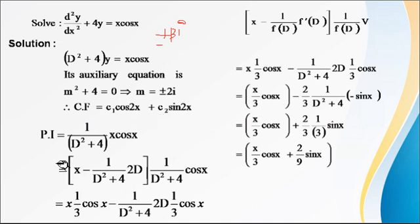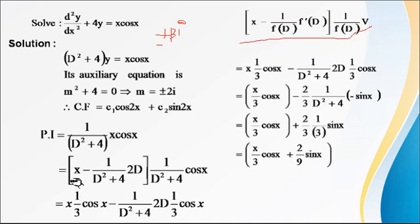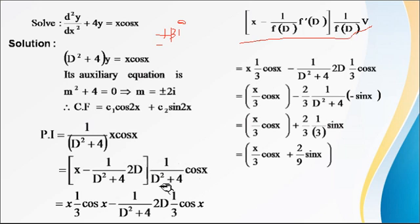Now PI = 1 upon f(D) into x·cos(x), that is 1/(D² + 4) into x·cos(x). In case of x·cos(x) we use the formula: x minus [1/f(D)]·f′(D) into 1/f(D) into v. Here f(D) is D² + 4, and f′(D) — the derivative of D² + 4 — is 2D. So we get 2D into 1/(D² + 4) into cos(x).